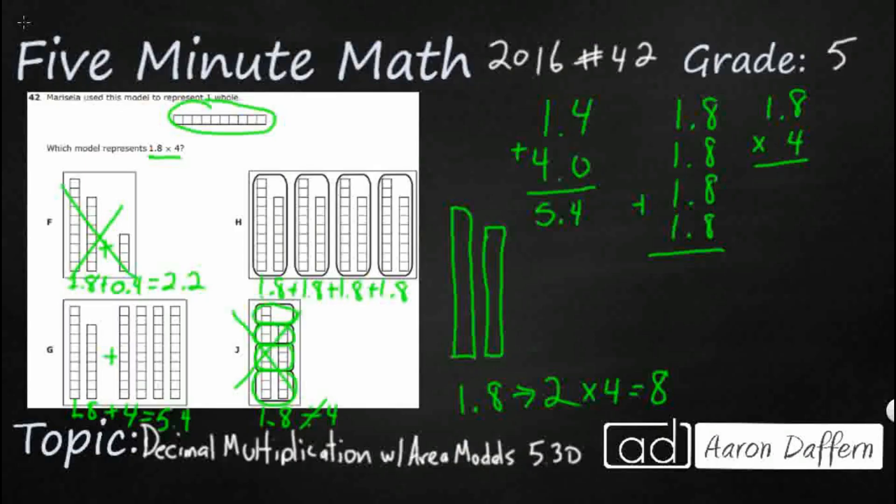So let's figure out what this is. 1.8 times 4. So 8 times 4 is going to be 32. 4 times 1 is 4. Add that 3 is 7. There's one digit behind the decimal in the factor, so there's one digit behind the decimal in the product. Our answer is going to be 7.2, which remember we were trying to get near this 8. So 7.2, that works. It doesn't round up to 8, but it's pretty close. Our answer here is H.